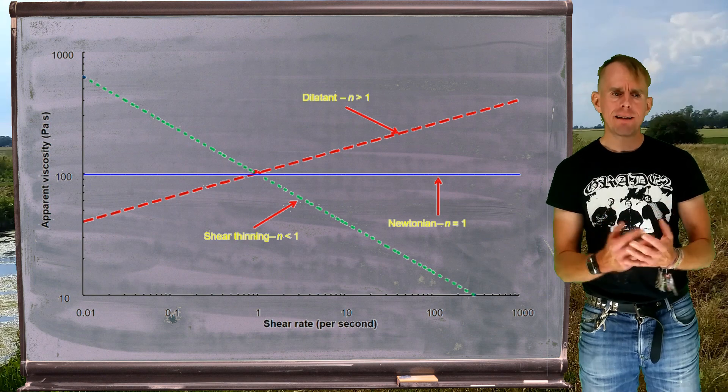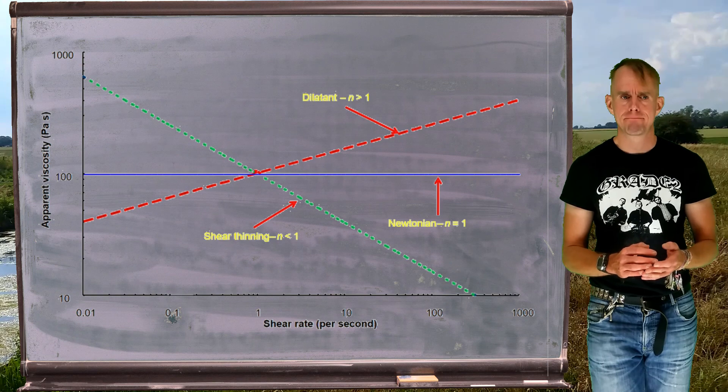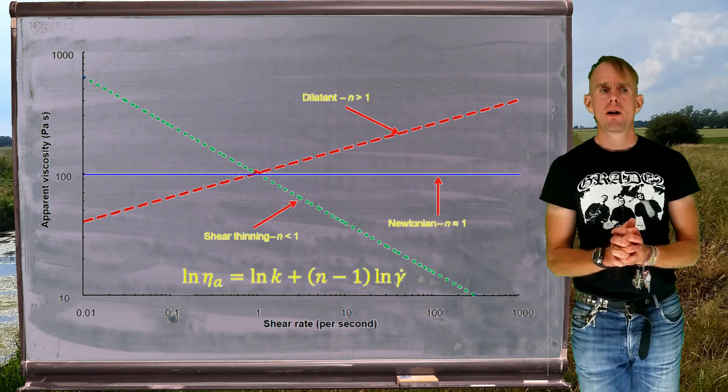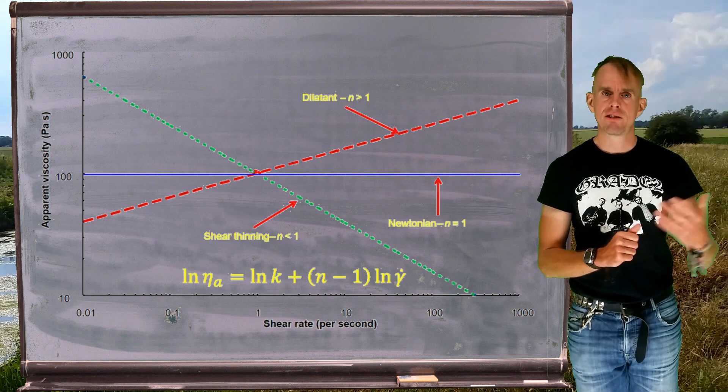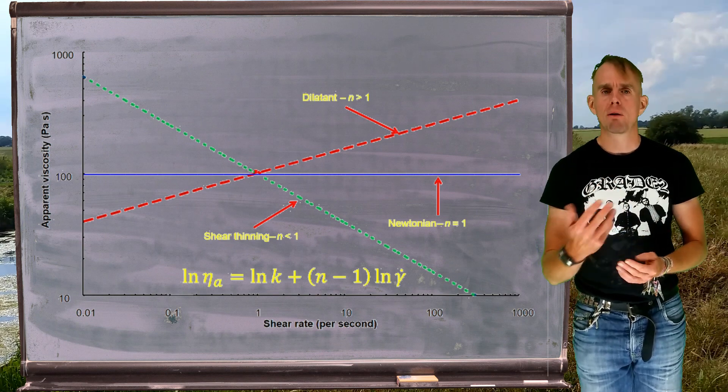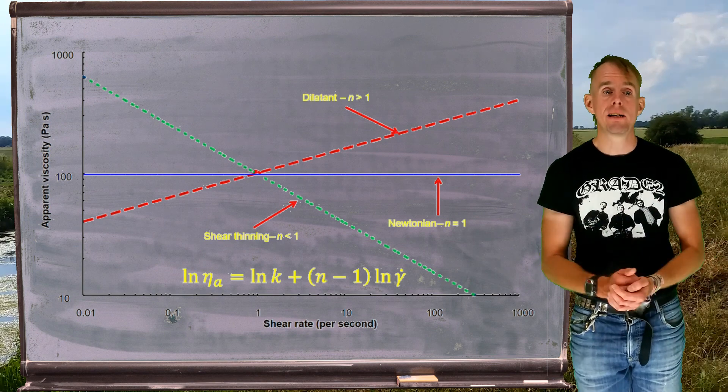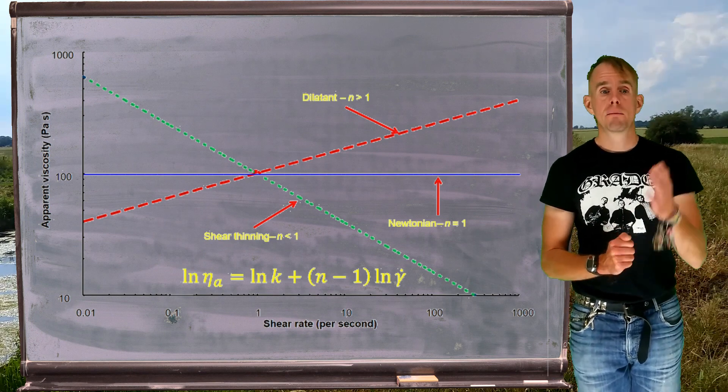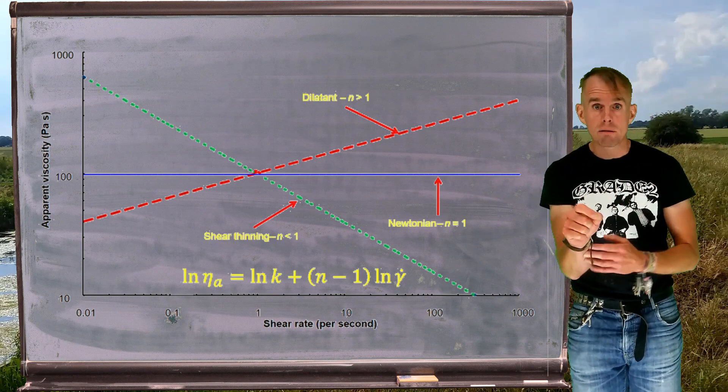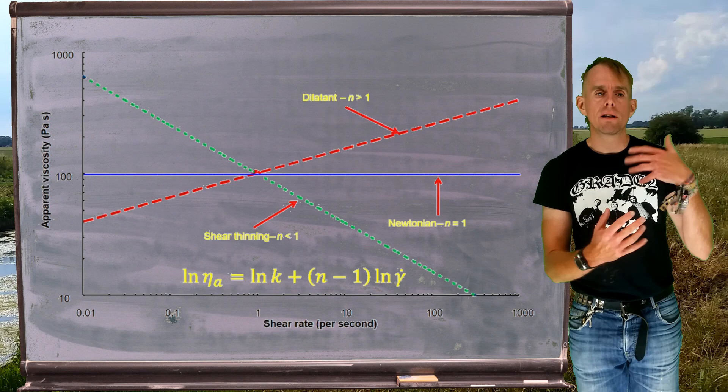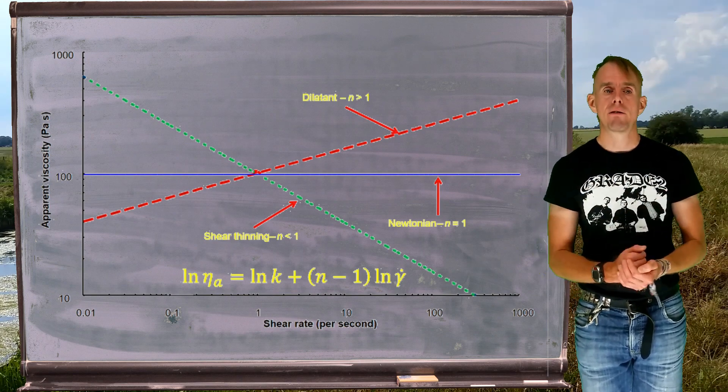So, let's think how we can use this, because it's kind of handy. If we have experimental data, we can use these plots to get values of our consistency index k and my power law index n, especially if we make a log plot, because log of eta_a is log of k plus n minus 1 log of gamma dot. So, suddenly looking at that straight line, if indeed you have a straight line, you can get the two parameters k and n very, very easily.